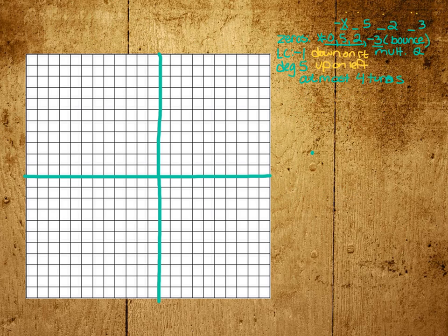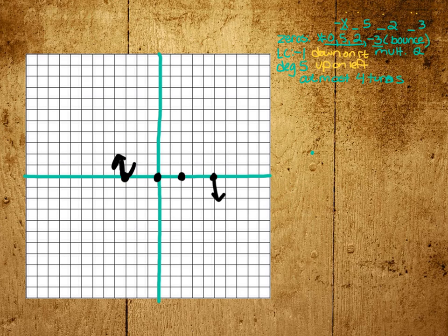So our zeros are at 0 and 5 and 2 and a bounce at negative 3. I know it's going down on the right. I know it's going up on the left. I know that there's a bounce at negative 3, so that'll go like this. We know that it is going to turn at most 4 times, and we've taken 1 already. So we can only have 3 more. That means that between here and here and here, it's going to have to turn one time in each interval. So we don't have any weird other stuff going on. So now all we have to do is figure out how high and how low does it go?